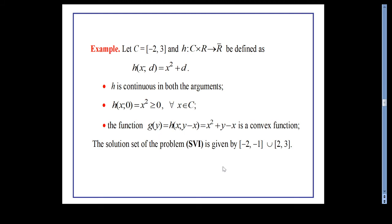As an example, let C be the closed interval [−2, 3] and h be the bifunction defined by h(x, g) = x² + g. Here h is continuous in both arguments, h(x, 0) = x² ≥ 0, and the mapping y ↦ h(x, y − x) is convex. The problem possesses a solution and its solution set is [−2, −1] ∪ [2, 3].